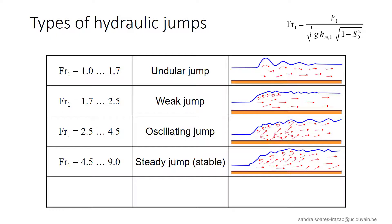For this range of inflow Froude numbers, we have the stable jumps, so 4.5 to 9. The end of the surface rollers coincides with the point where the bottom jet leaves the region close to the bed. The hydraulic jump is considered stable, and it is the ideal configuration to dissipate energy without inducing downstream damages, as we will see later.